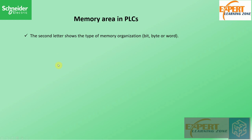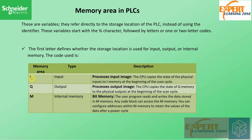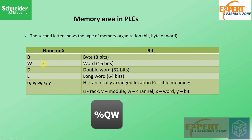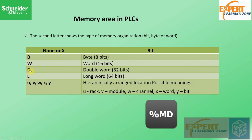So the first part covered input, output, and M memory. The second part now defines the nature of the data. If the second letter is B it means byte — for example %IB means input byte. %QW means output word. %MD means memory double word. D stands for double word (32 bits), W stands for word (16 bits), and L stands for long word (64 bits).